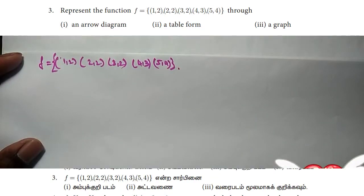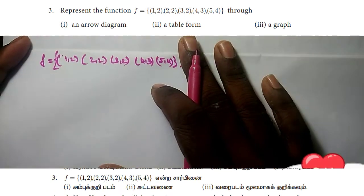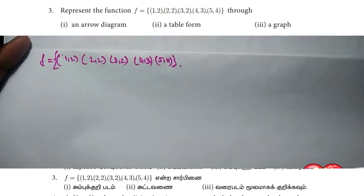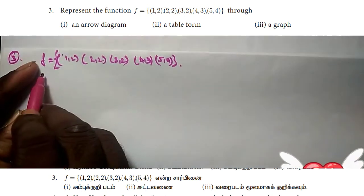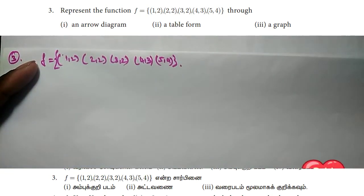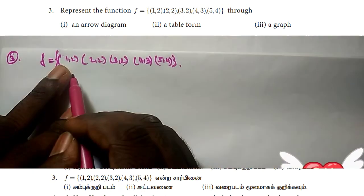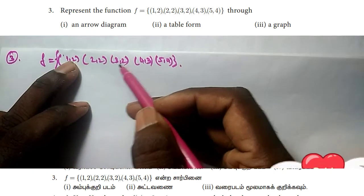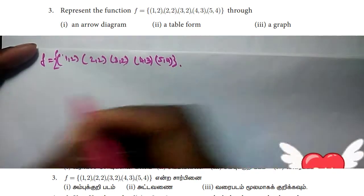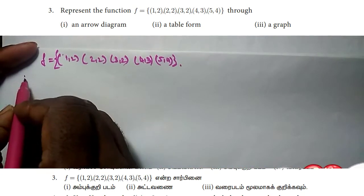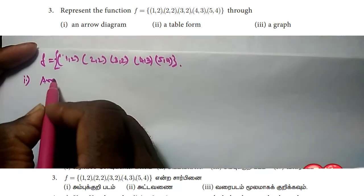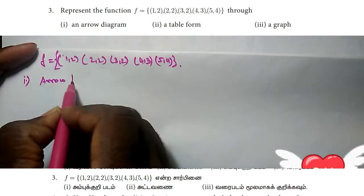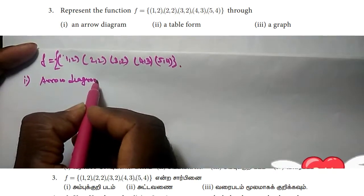Hi friends, in this video it is Exercise 1.4. So x is 1.4. First, here is the function. f equals the set of {(1,2), (2,3), (2,4), (3,5), (4,...)}. First, here is the arrow diagram.